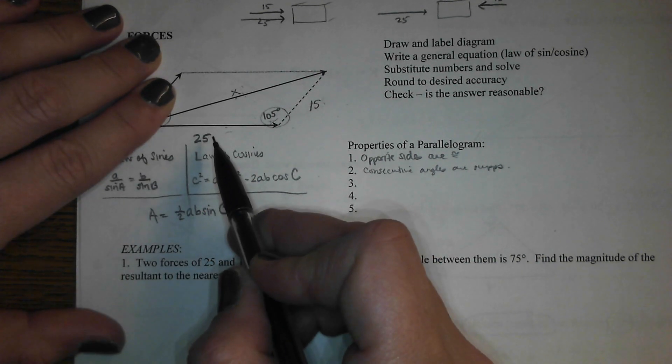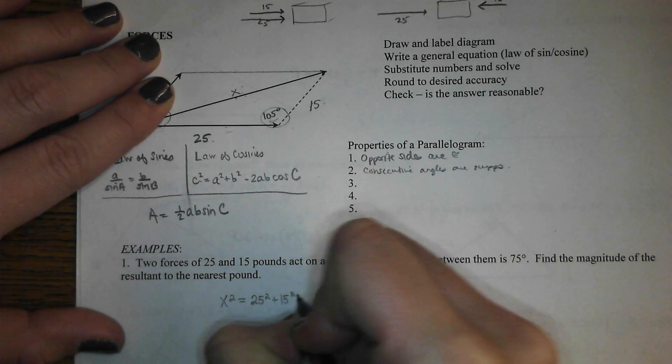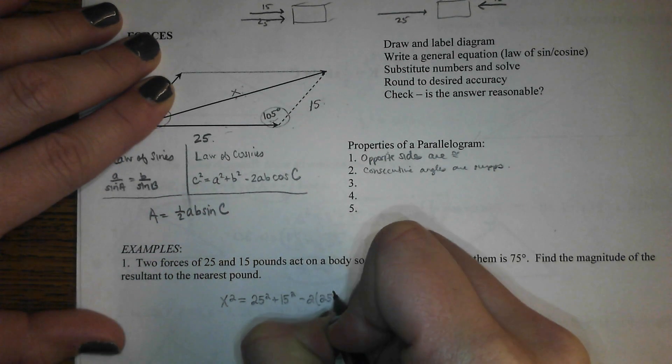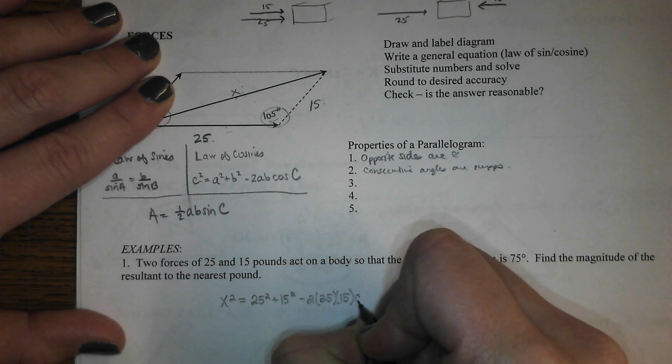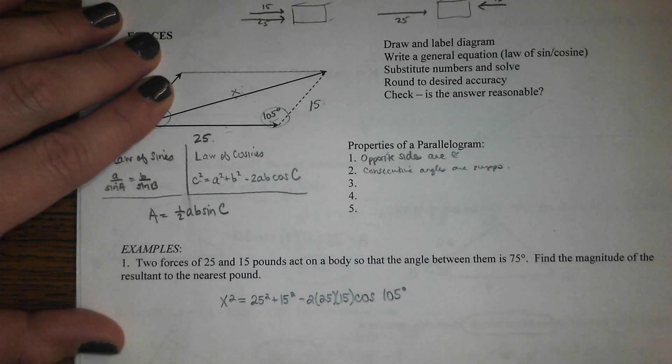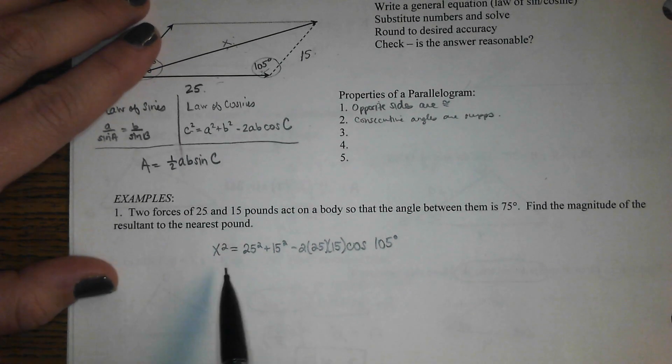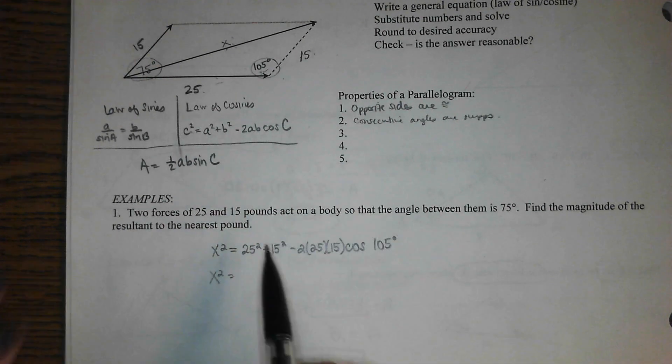your other two sides squared, 25 squared plus 15 squared, minus 2 times 25 times 15 times the cosine of 105 degrees. And this is an easier one to solve because x squared is already by itself. So I'm just going to type in this big number all in one shot.